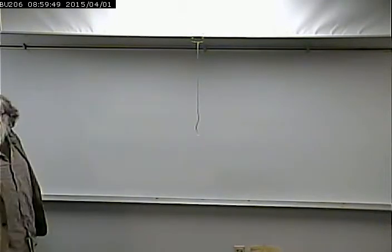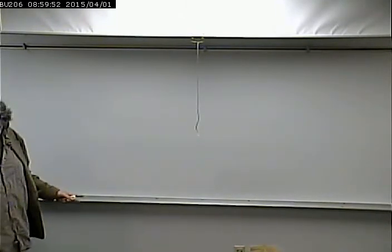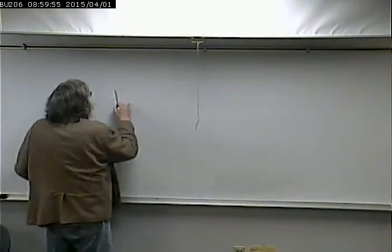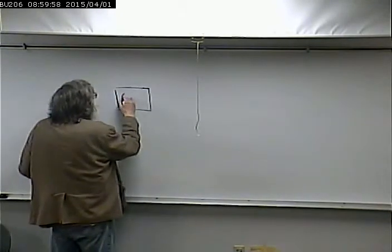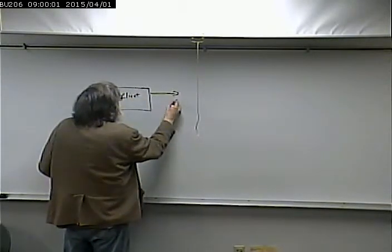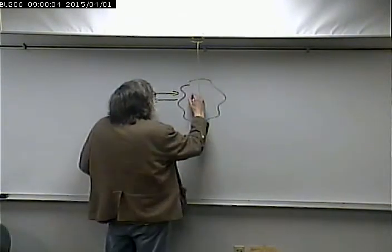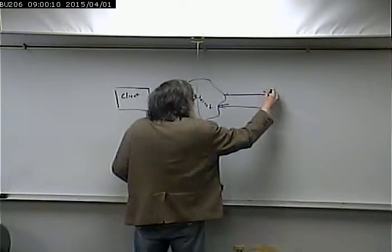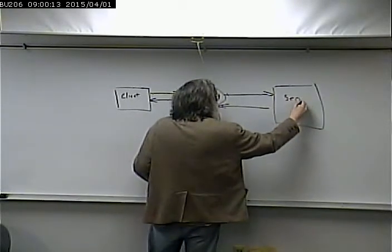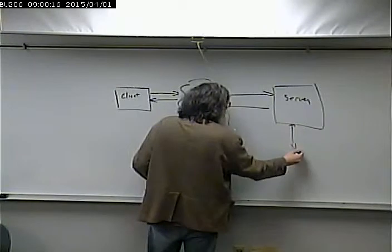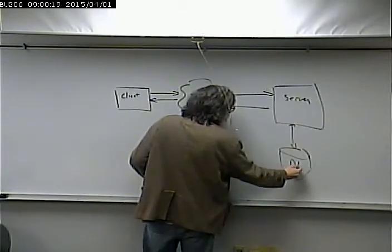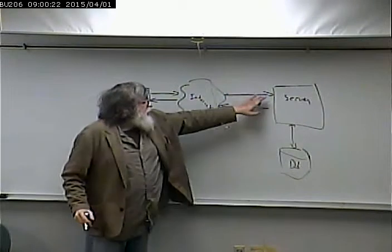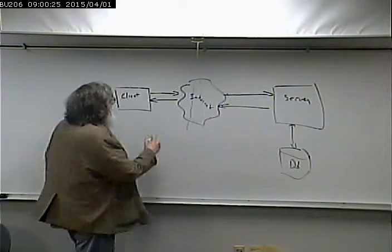We talked a little bit about Ajax last time. To put it in our diagram — the client connects to the internet, makes a request to a server. The server may be interacting with the database or other stuff. The client makes a request that gets mapped to the server, and the server responds back with a web page.